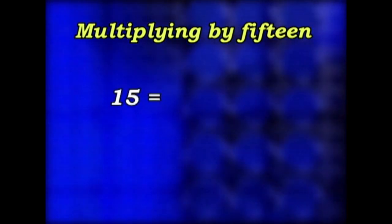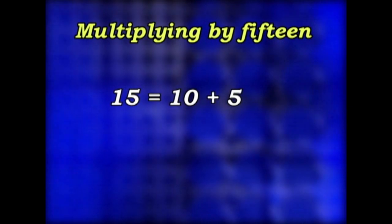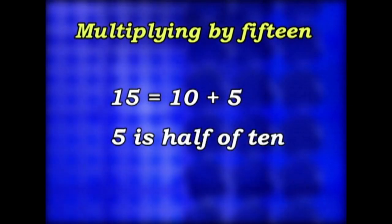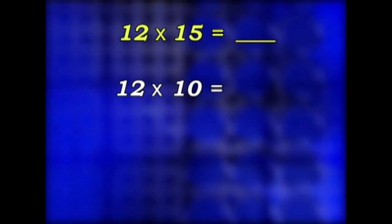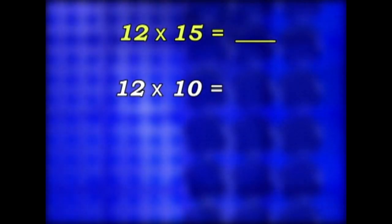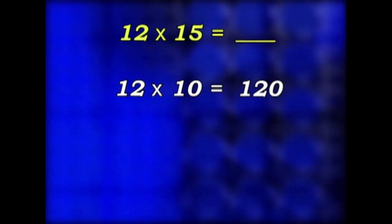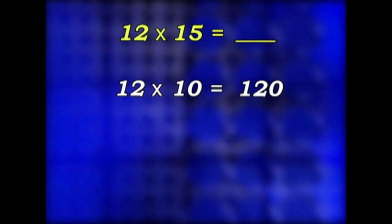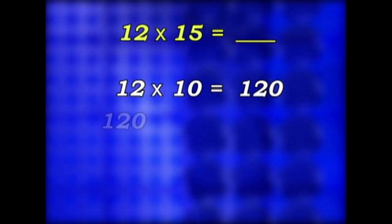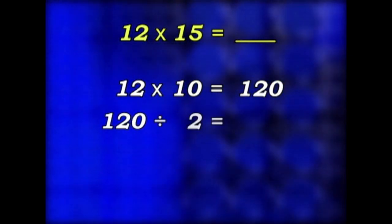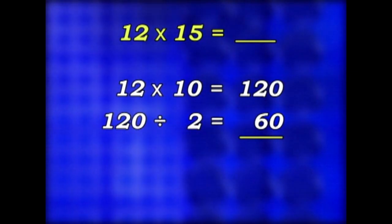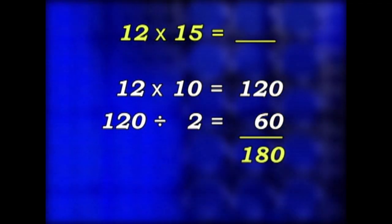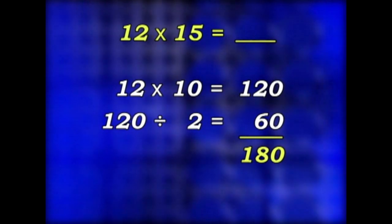Now let's try multiplying by 15. 15 is the same as 10 and 5, and 5 is half of 10. So let's multiply 12 by 15. First, multiply 12 by 10. That gives us 120. Now we said 5 is half of 10, so half of 120, that's 120 divided by 2, is 60. If we add 120 and 60, we get 180. So 12 times 15 is 180.